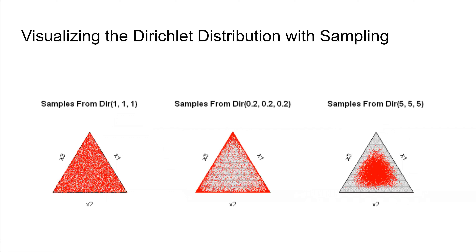Now that we have visualized the Dirichlet distribution, we now sample from it. A sample from a k-dimensional Dirichlet distribution defines a categorical distribution. This is because a sample from a k-dimensional Dirichlet distribution is a k-dimensional vector whose components are non-negative and add up to one, defining a probability distribution over k categories. We sample from three Dirichlet distributions. The Dirichlet distribution with parameter (1, 1, 1) is in fact a uniform distribution.